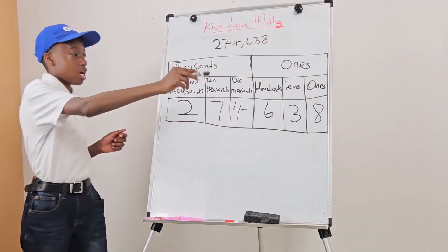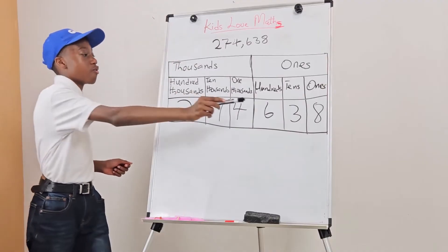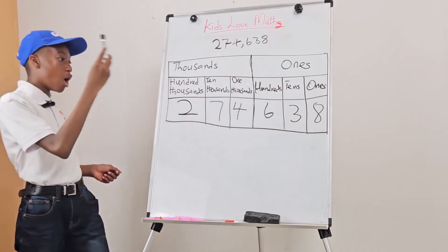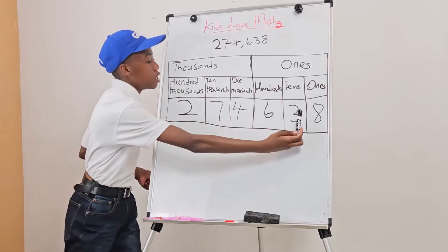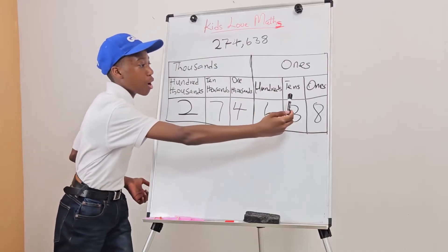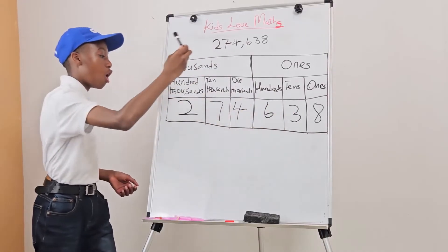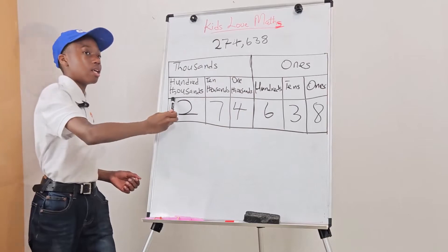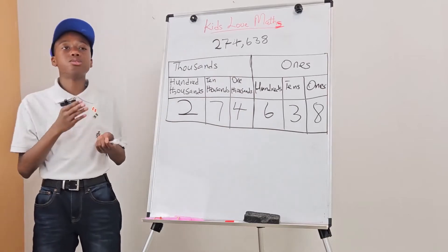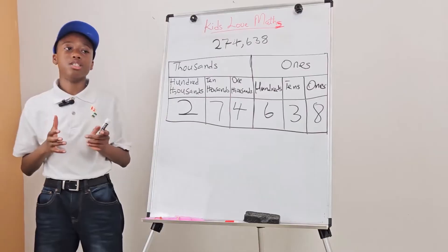We should always write the starting number from the ones, or from the right, all the way to the left. We put commas to separate the thousands from the ones.